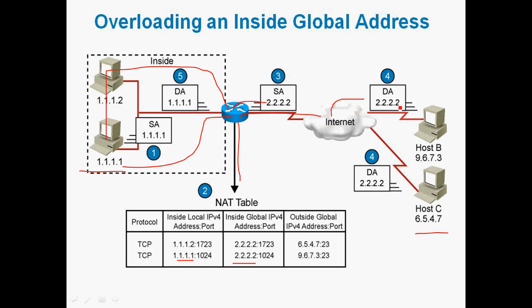The packet reaches destination 6.5.4.7, which replies to source 2.2.2.2. When the return packet comes back to this router, it checks the NAT table again and 2.2.2.2 is translated back into 1.1.1.1, so the packet re-enters the internal network. This is overloading — a many-to-one mapping where many private IP addresses can be translated into a single public IP address.